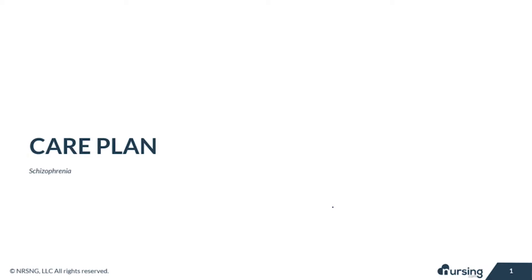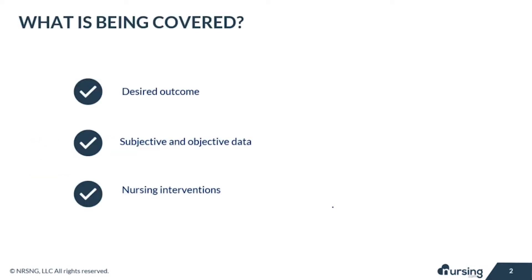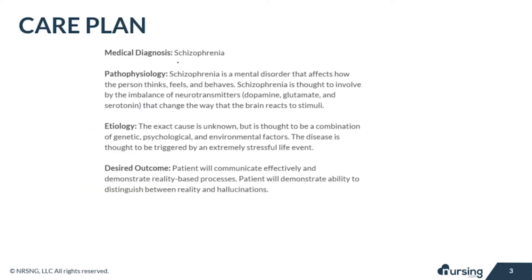In this care plan we will explore schizophrenia. We're going to talk about the desired outcome, the subjective and objective data, along with the nursing interventions and rationales for each. Our medical diagnosis is schizophrenia, which is a mental disorder that affects the brain.